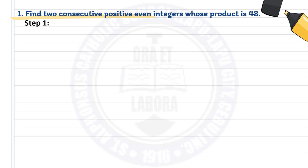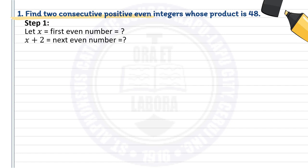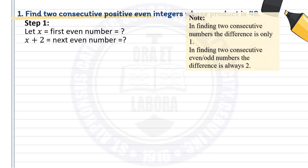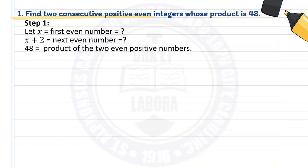Step 1: Find what is x. Let x be the first even number — that is the unknown. Next, let x plus 2 be the next even number. Take note that in finding two consecutive numbers the difference is only 1, and in finding two consecutive even or odd numbers the difference is always 2. Also, 48 is the product of the two even positive numbers.